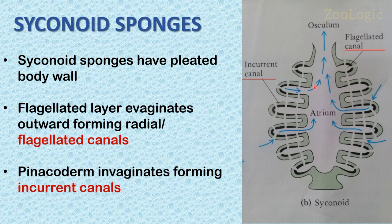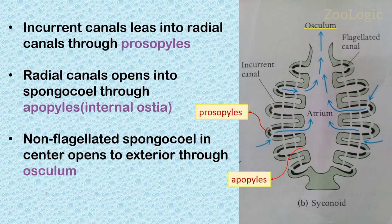The corresponding canals formed by the invagination of the outer surface, the ectoderm, are termed incurrent canals. Incurrent canals are devoid of choanocytes, while the flagellated canals have choanocytes, the collar cells. Water from the incurrent canals moves into adjacent radial canals through minute openings called prosopyles, as shown in the diagram. The flagellated radial canals open into the central spongocoel by internal ostia, or apopyles.